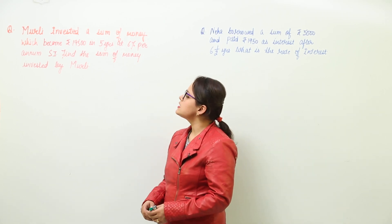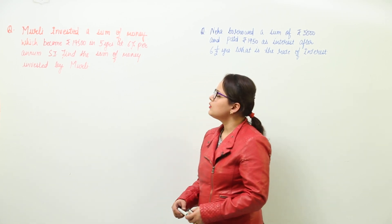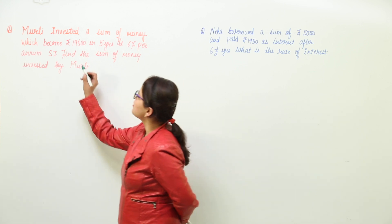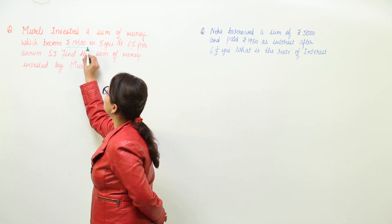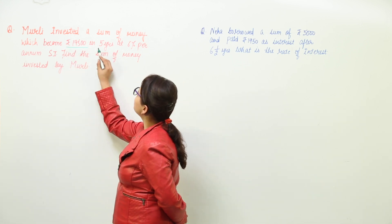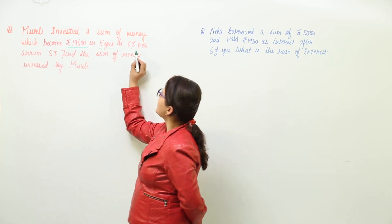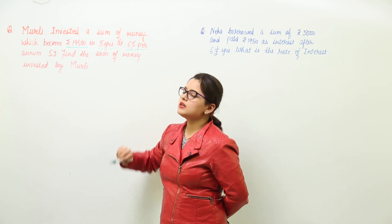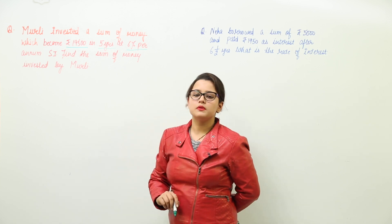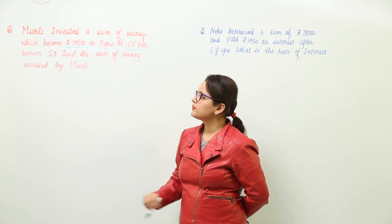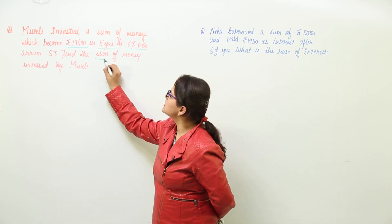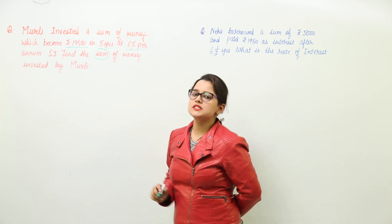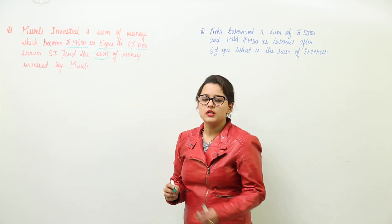Murali invested a sum of money which became 19,500 in 5 years at 6% per annum simple interest. We have to find out the sum of money invested by Murali.